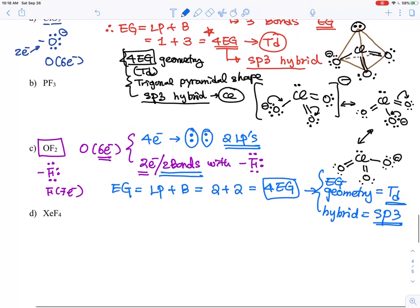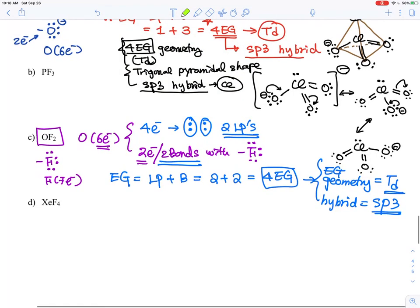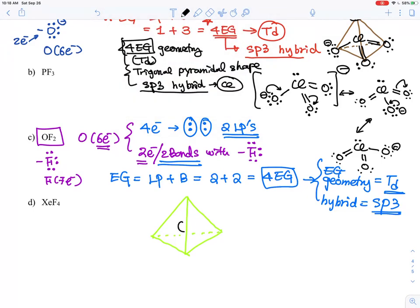This geometry gives essentially a frame for where to put those bonds and lone pairs. This is a tetrahedral geometry, and then I'm going to put in the center oxygen right there. And then I need to put two lone pairs and the two bonds.